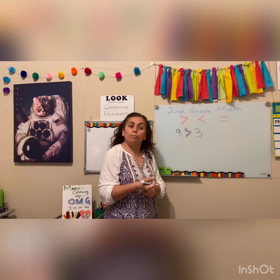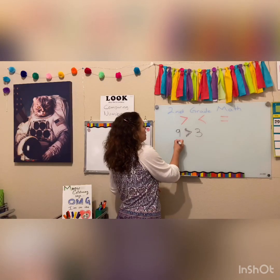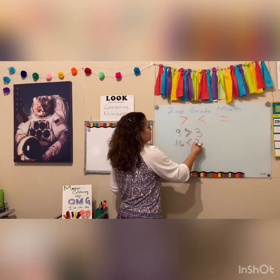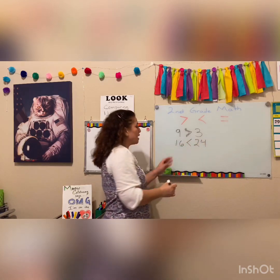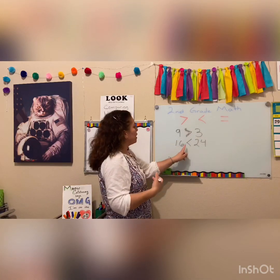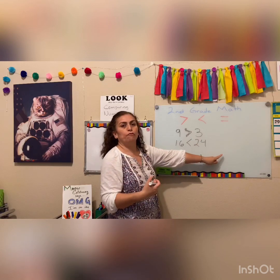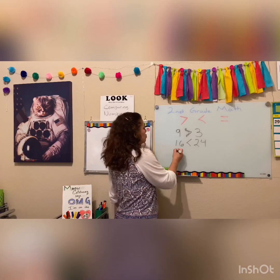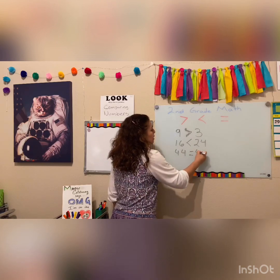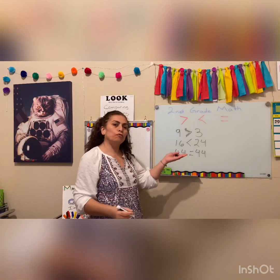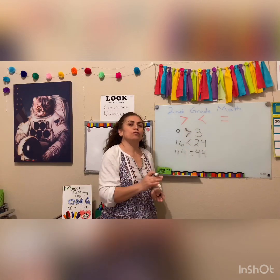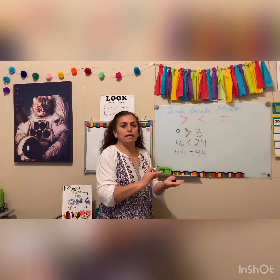I can use two-digit numbers and I can say 16 less than 24. Again I read from left to right and I'm going to say 16, my first number, less than 24, or I can use the same number to say 44 equals 44. So those are the three ways I can use my symbols: greater than, less than, equal to.